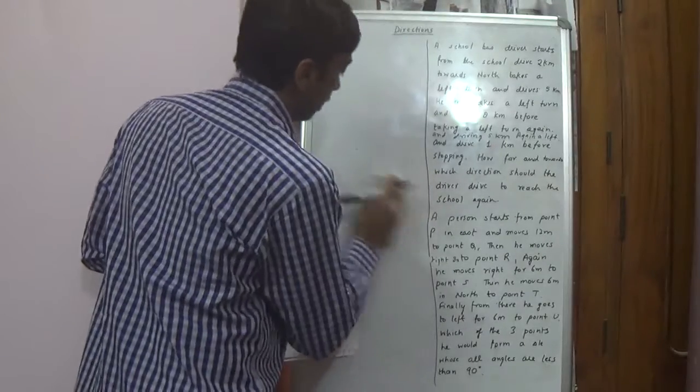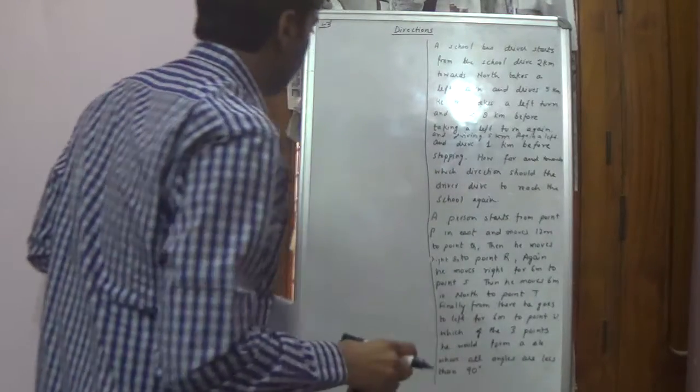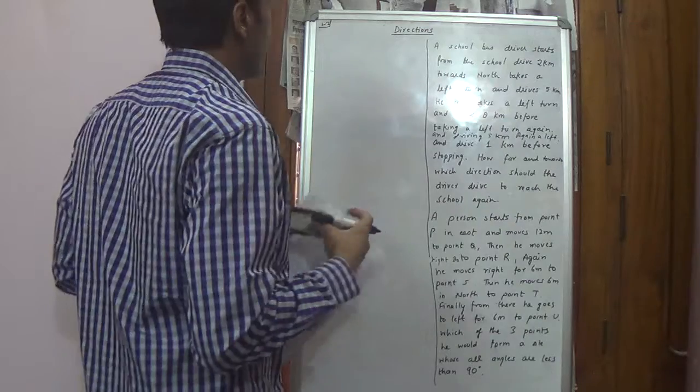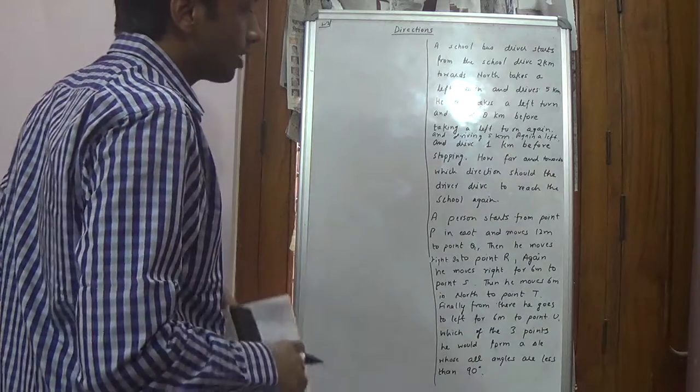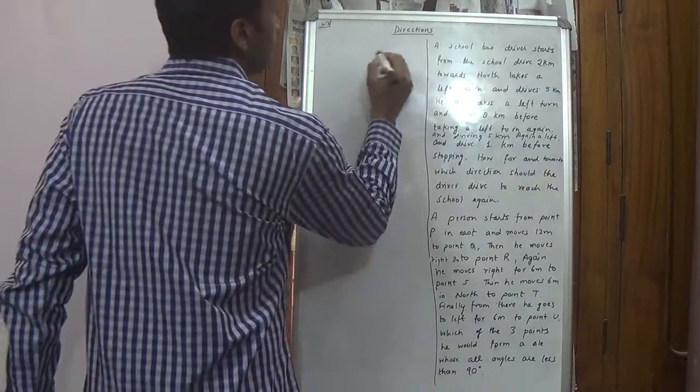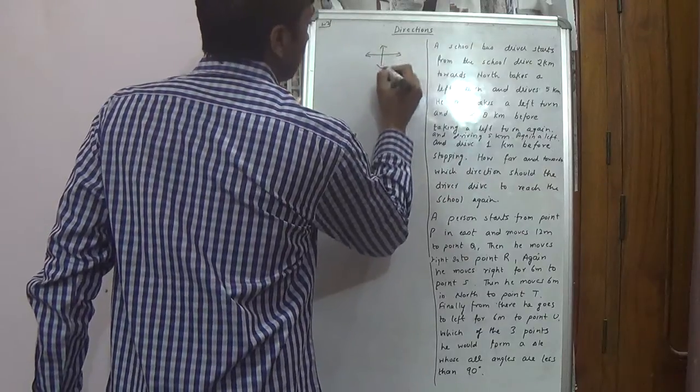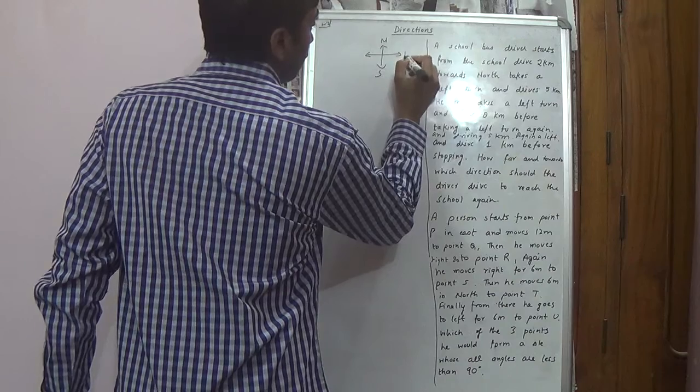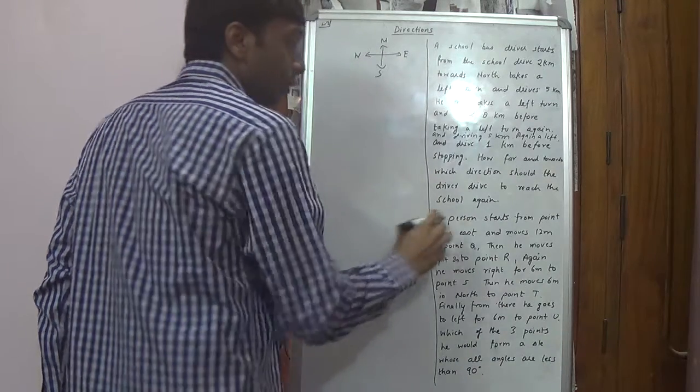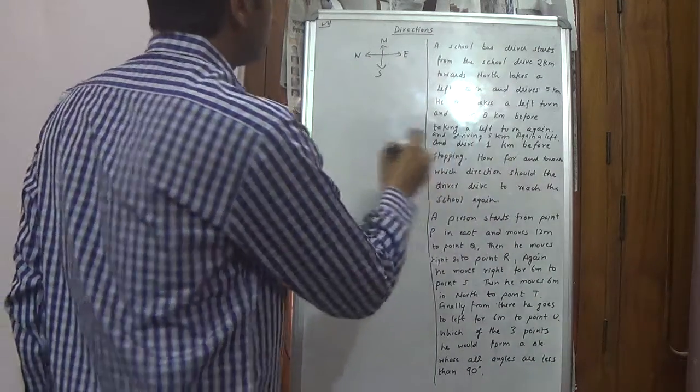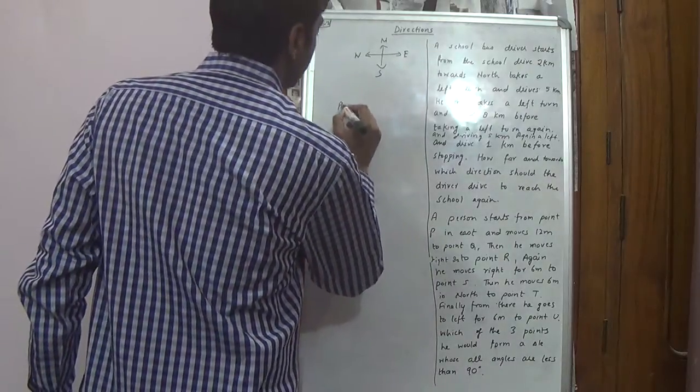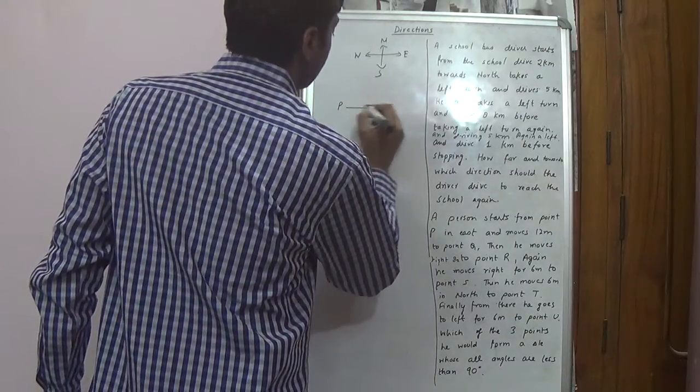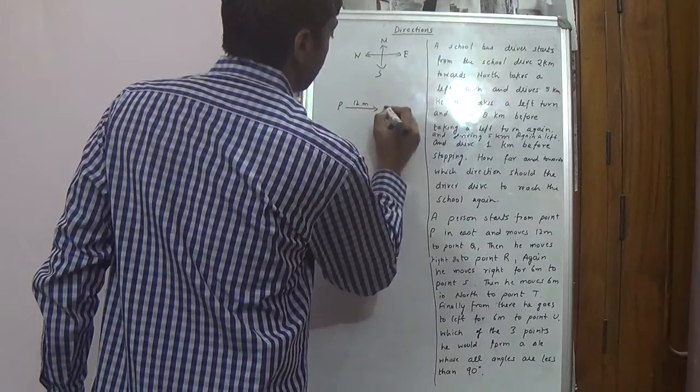Now, this is again an IBPS exam question from 2013. Second question which I am going to solve. A person starts from point P in the east. You can draw this. You can keep it handy with you. North, south, east, west. A person starts from point P in east and moves 12 meters to point Q.